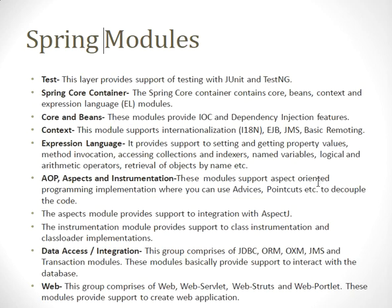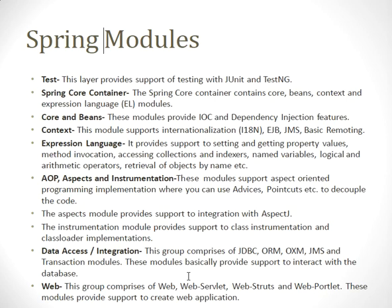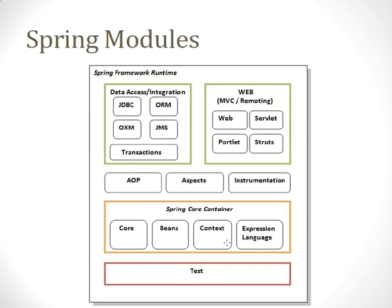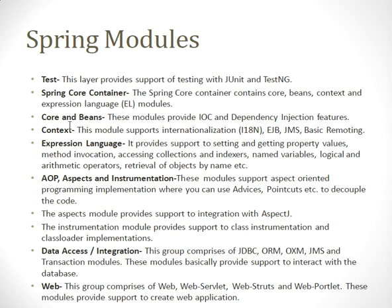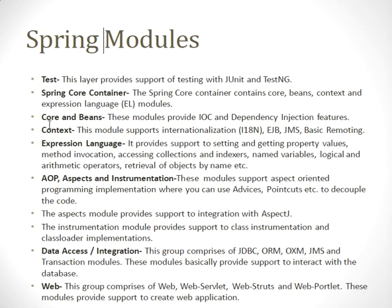The first layer provides support for testing with JUnit and TestNG. The Spring Core Container contains Core, Beans, Context, and Expression Language modules. The Core and Beans module provides IoC and dependency injection features. The Context module supports internationalization. The Expression Language module provides support for setting and getting property values, method invocation, collection indexing, and naming.